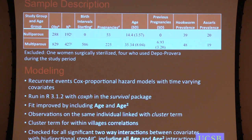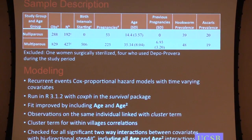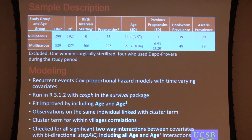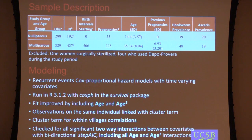The sample is a little complicated. There are two groups of women: a nulliparous group that has not yet reproduced — 192 women with 288 observations — and a multiparous group of 427 women with 829 observations. This follows them longitudinally, so many people are observed multiple times. Women who had used Depo-Provera were taken out. I'm looking at recurrent events using Cox proportional hazard models to look at the hazard of becoming pregnant after giving birth.